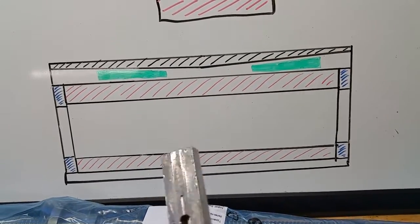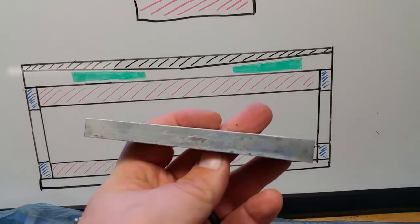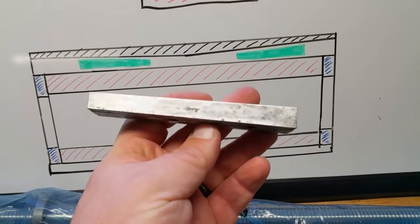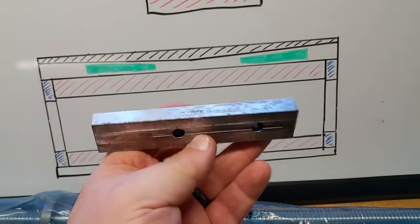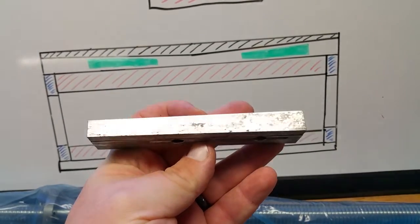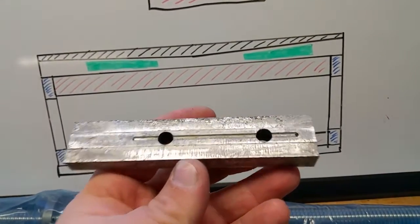Now, these tapered gibs are a little different than what you might see on, say, a Bridgeport, because a Bridgeport uses dovetail ways and it uses a steel gib, which is fairly solid. These ones are aluminum, and these came out of my machine.